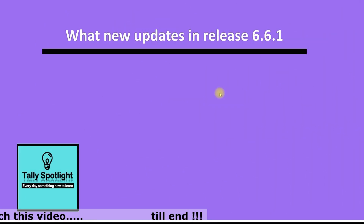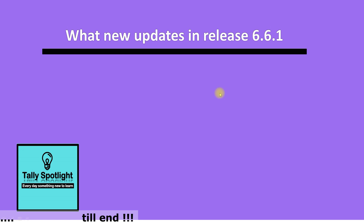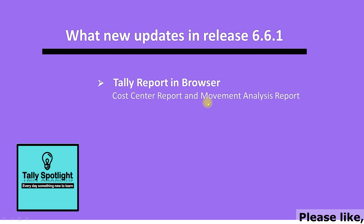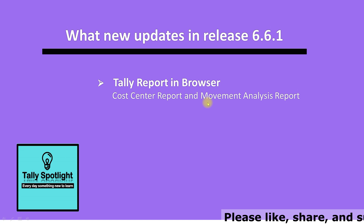The first update in release 6.6.1 is the Tally report in browser. In the browser view, they have given two additional reports: one is the Cost Center report and another one is the Movement Analysis report. Under the Cost Center report, there are two reports — Cost Center Breakup and Ledger-wise Cost Center Breakup. For Movement Analysis, they have given the option for Ledger-wise as well as Stock Item-wise Movement Analysis report view.